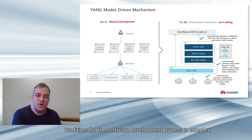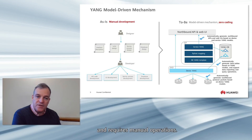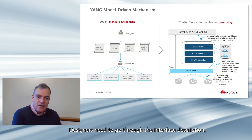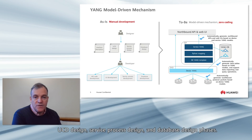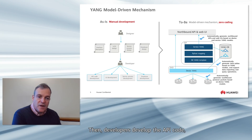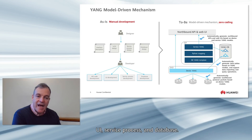Traditionally, the software development process is complex and requires manual operations. Designers need to go through the interface description, UCD design, service process design, and database design phases. Then developers develop the API code, UI, service process, and database.